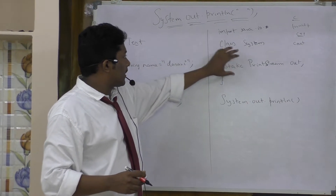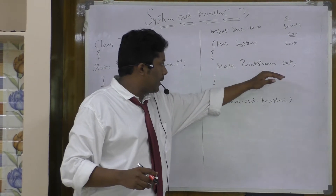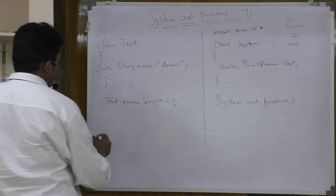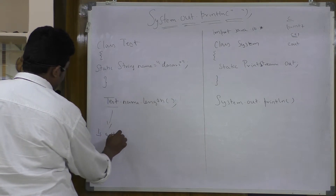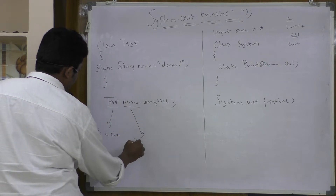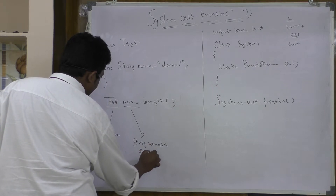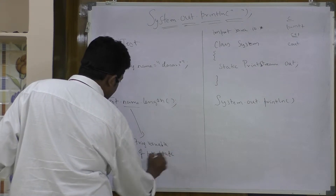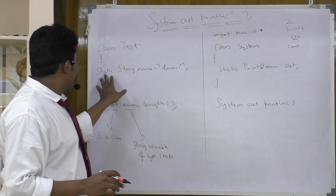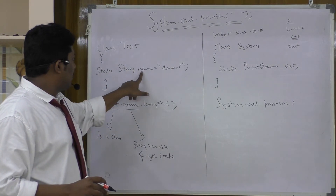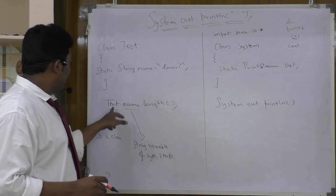We know that system is a class. Within that class, out is a PrintStream object of type static. Test is a class, and name is a string variable of type static. If you recollect knowledge of static variables - if you declare a variable as static, you can directly access it with the class name. That is what we did here.